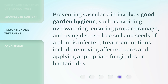Preventing vascular wilt involves good garden hygiene, such as avoiding overwatering, ensuring proper drainage, and using disease-free soil and seeds. If a plant is infected, treatment options include removing affected parts and applying appropriate fungicides or bactericides.